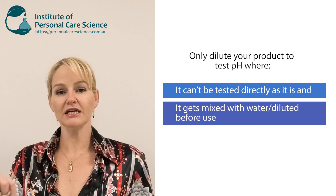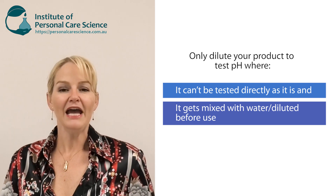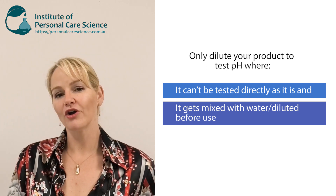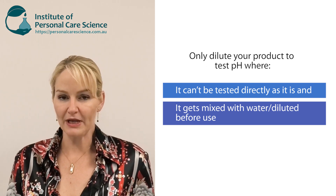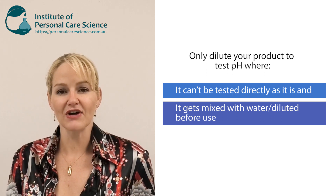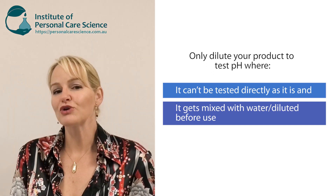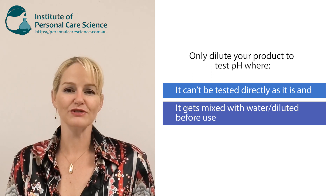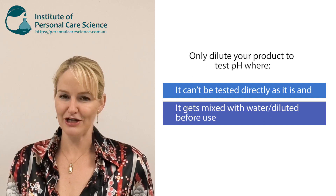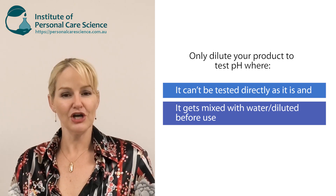You can't test the pH of a solid product or a powder product. In fact, pH is a measure of ions in a liquid formulation, so it needs water as a continuous phase for you to be able to measure pH in the first place. You also can't test the pH of oils, nor is it relevant, because oils don't have a pH value — there is no water present for that charge to be carried.